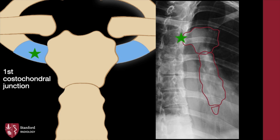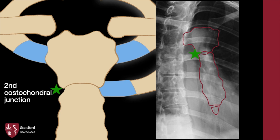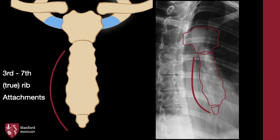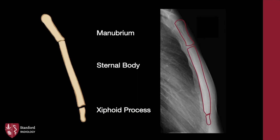The first costochondral junction articulates entirely with the manubrium. This chondral structure is where the costoclavicular or rhomboid ligament attaches. In contrast, the second costochondral junction straddles the manubral sternal joint. The third through seventh ribs directly articulate with the lateral aspects of the sternum, contrasting with the false eighth through tenth ribs and the floating eleventh and twelfth ribs. The lateral view further highlights the three main parts of the sternum and is helpful for assessing the sharpness of the sternal angle and the anteroposterior contour of the sternal body.